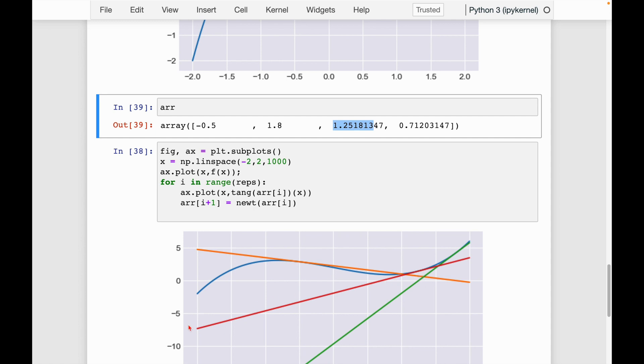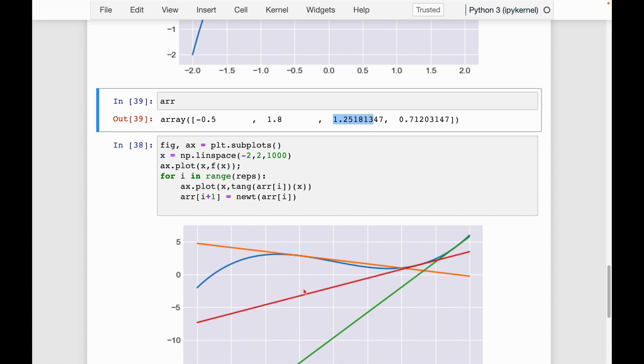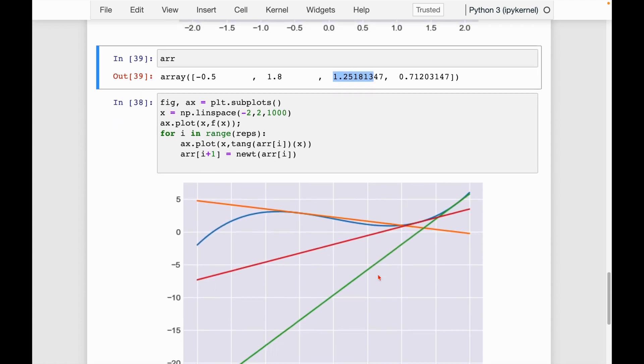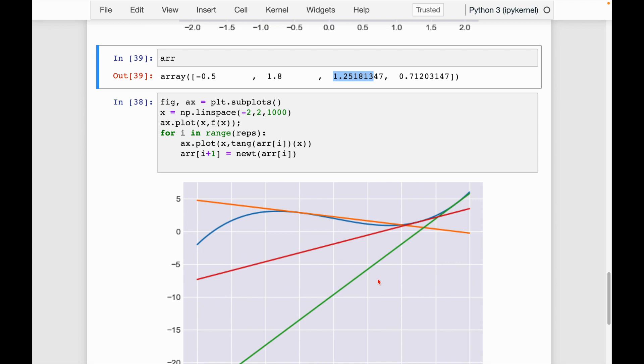so we draw the tangent line once again, that's this red line. And where does that cross the x-axis? It's here around something a little bit greater than 0.5. So 0.7. And we can see, it's giving our function here versus the zero is all the way over here.